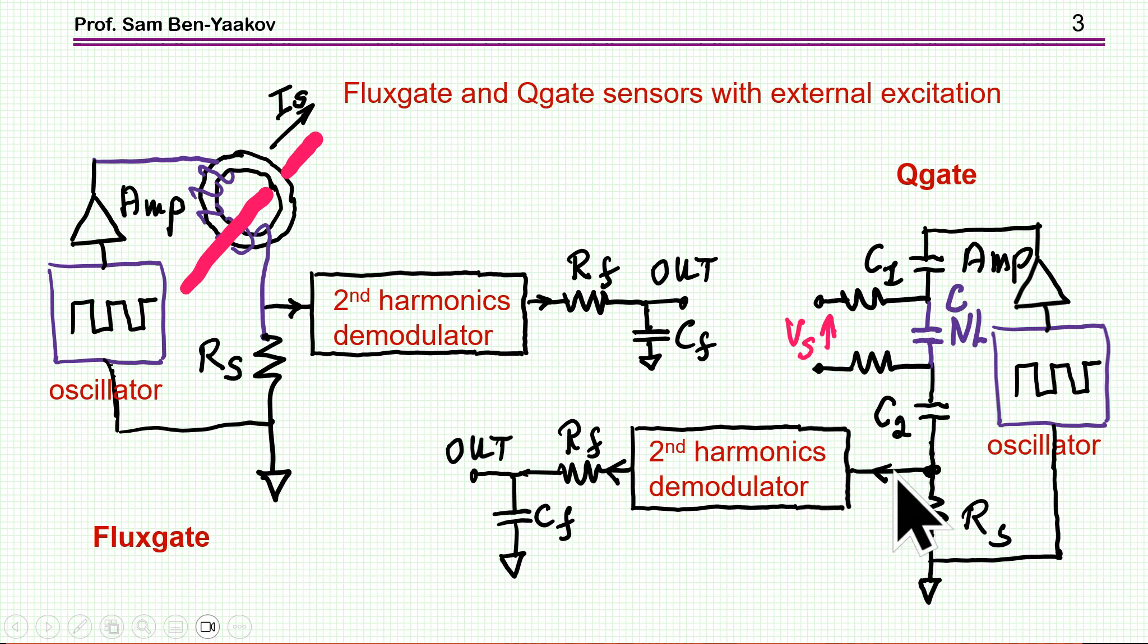And by demodulating this signal here, we can get an output which is a function, actually it's a linear function, could be of the measured voltage. Now this could be a DC voltage or DC plus AC, but the frequency has to be much below the oscillator frequency because of the Nyquist criteria.